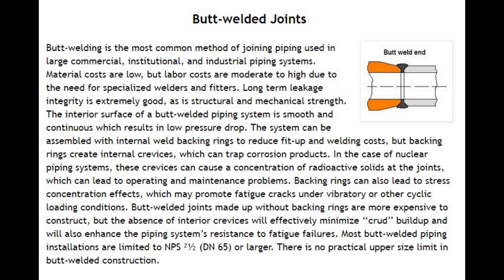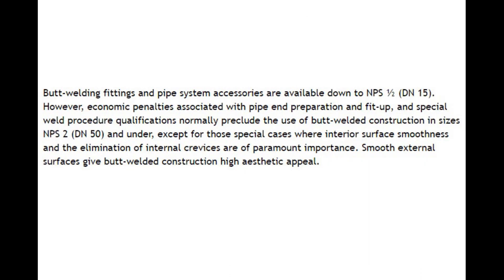Most butt welded piping installations are limited to NPS 2½ (DN65) or larger. There is no practical upper size limit in butt welded construction. Butt welding fittings and pipe system accessories are available down to NPS ½ (DN15). However, economic penalties associated with pipe end preparation and fit-up, and special weld procedure qualifications, normally preclude the use of butt welded construction in sizes NPS 2 (DN50) and under, except for special cases where interior surface smoothness and the elimination of internal crevices are of paramount importance.